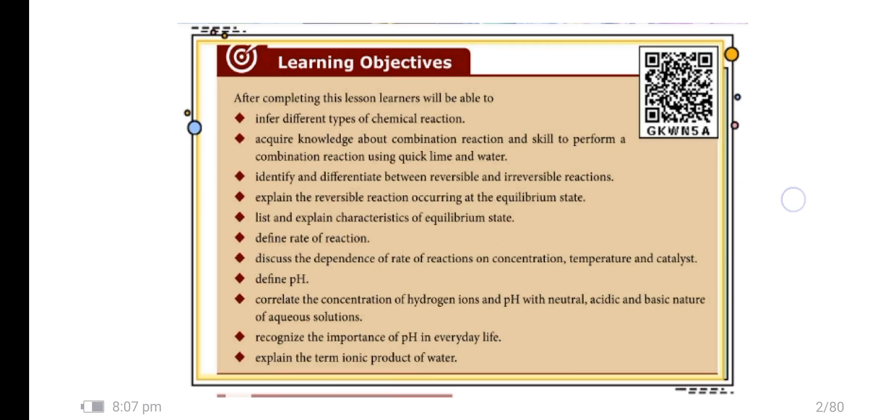Explain the reversible reaction acquiring the equilibrium state, define the rate of reaction, discuss the dependence of rate of reaction on concentration, temperature and catalyst, and correlate the concentration of hydrogen ions and the pH with neutral acids and base nature.